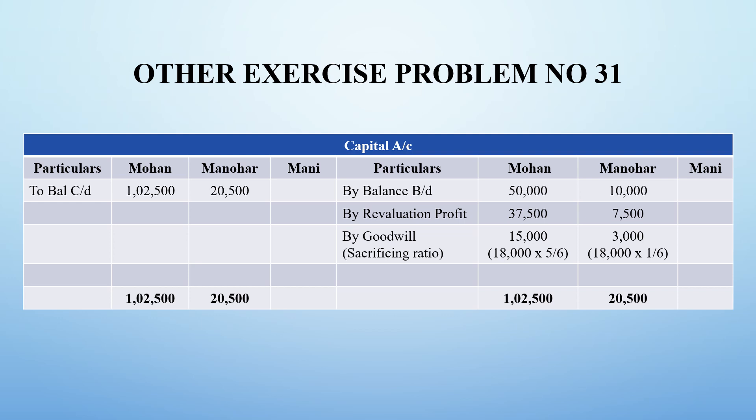The goodwill of 18,000 brought in by Mani is split in the sacrificing ratio - 15,000 goes to Mohan and 3,000 goes to Manohar. So the grand total capital values become 1,02,500 for Mohan and 20,500 for Manohar. This is the actual capital value of Mohan and Manohar when Mani enters the firm.